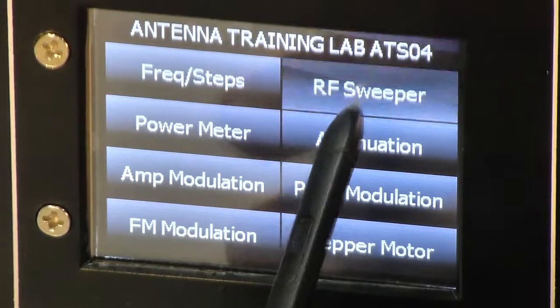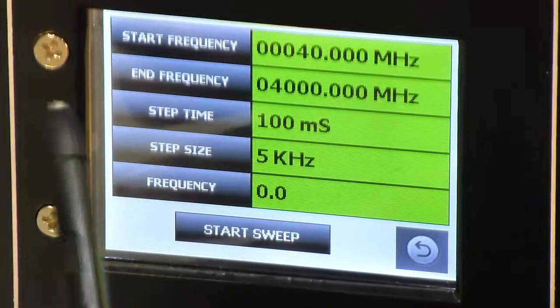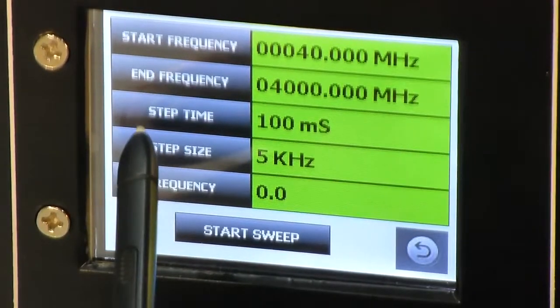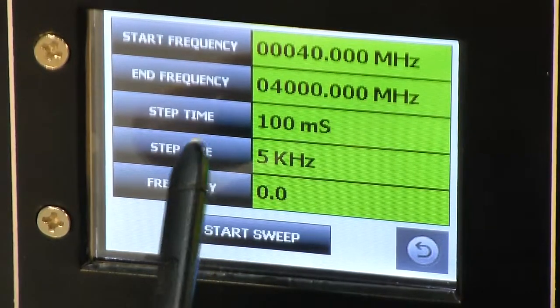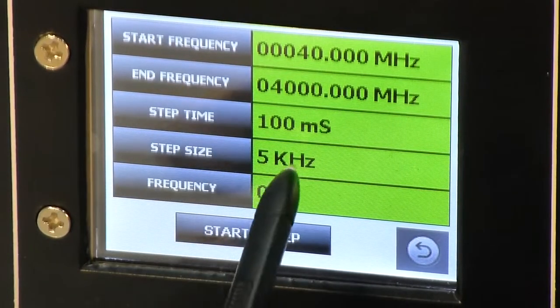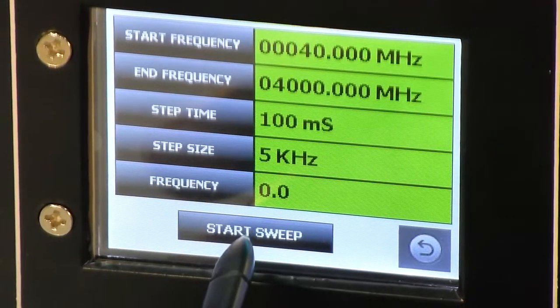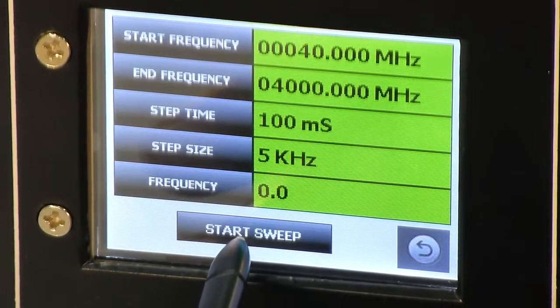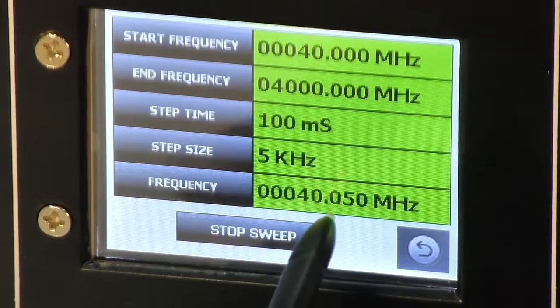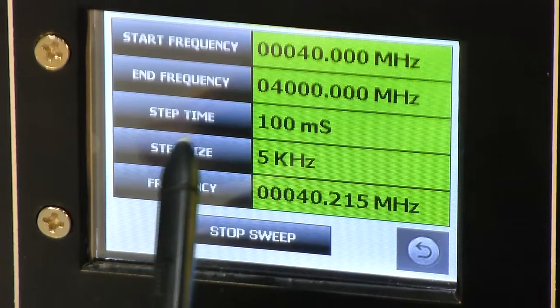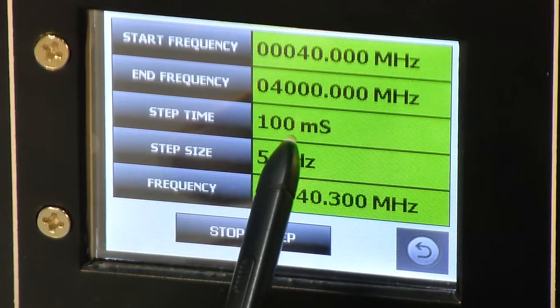Then there is an RF sweeper option. In this RF sweeper you see start frequency, end frequency, the step time in milliseconds, and step size in kHz. This will show current frequency when you start the sweeper. If you start the sweeper, frequency starts rolling with the desired frequency size and after every desired particular time interval.